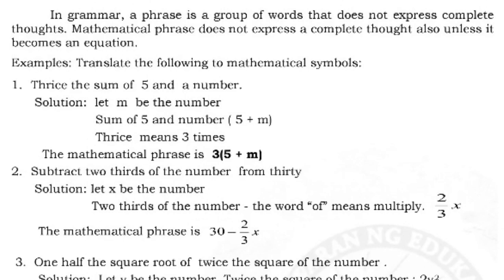Number 2: subtract two-thirds of the number from thirty. Let x be the number. The word 'of' means multiply, so two-thirds of the number is (2/3)x. Since we subtract this from thirty, the expression is thirty minus two-thirds x: 30 − (2/3)x. The key word here is 'from.'